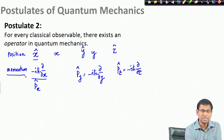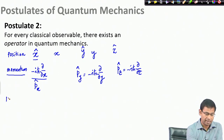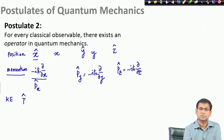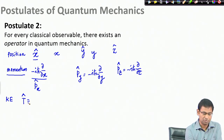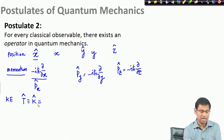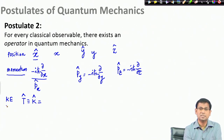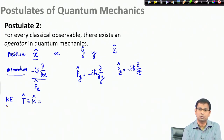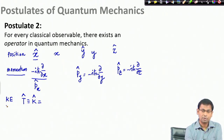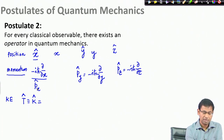If I know the momentum then I can get the kinetic energy, which is given by T-hat. The hat represents that I am talking about an operator. We know kinetic energy is simply p-squared divided by 2m — momentum squared divided by twice the mass. So I can use the same relation here: the kinetic energy operator is p-hat_x squared divided by 2m.